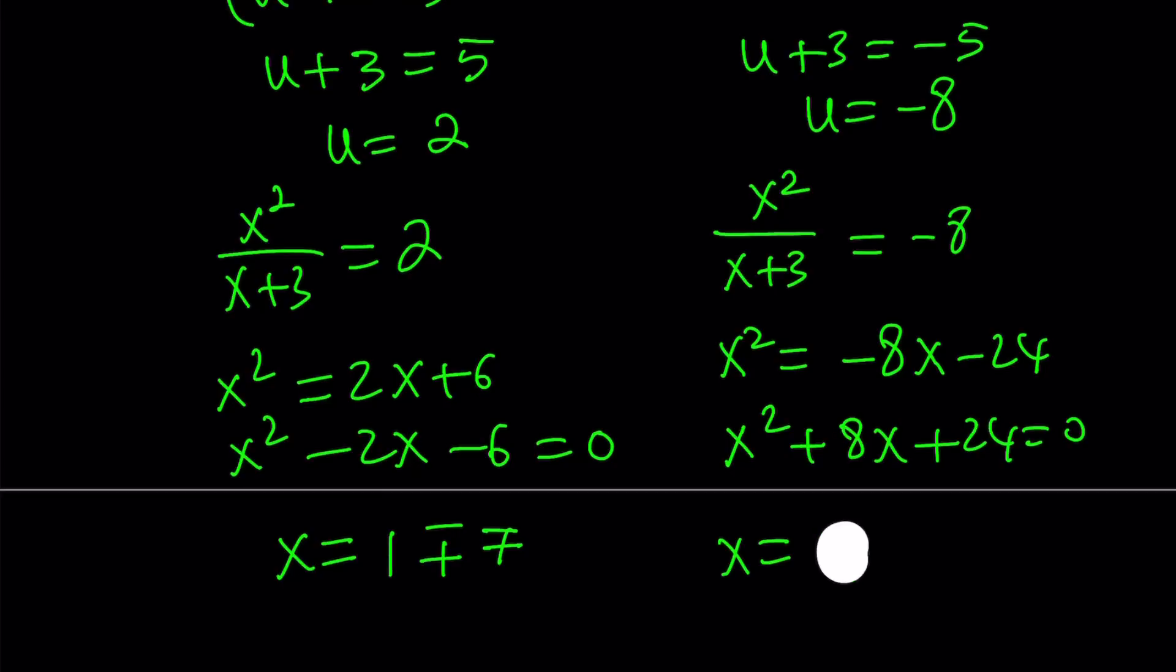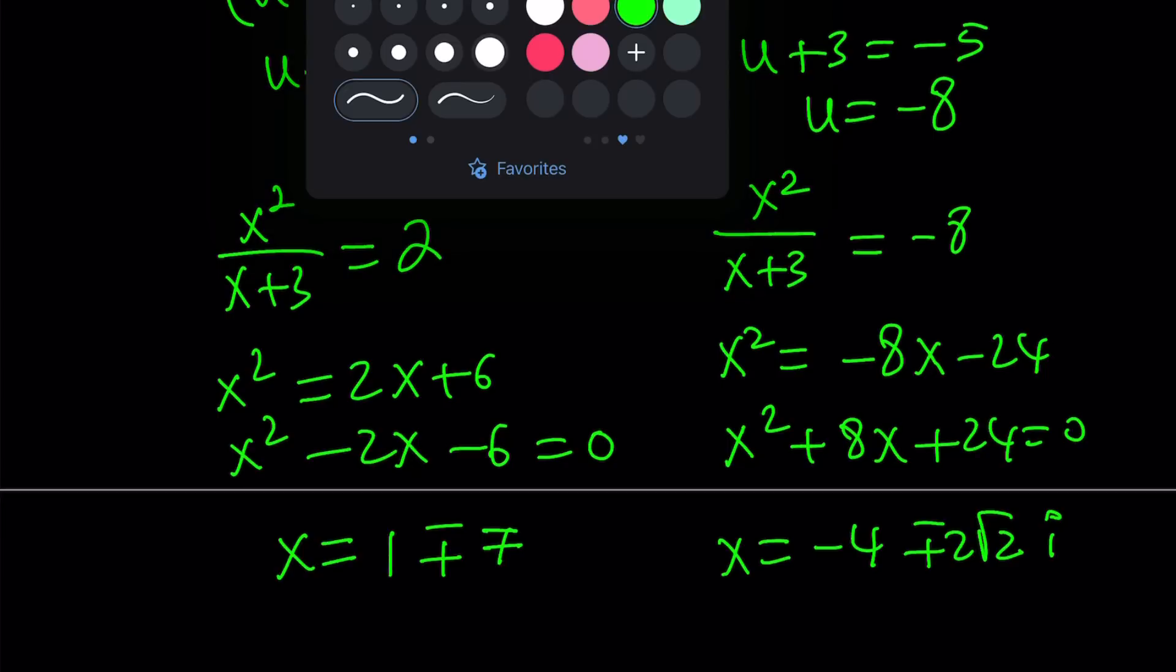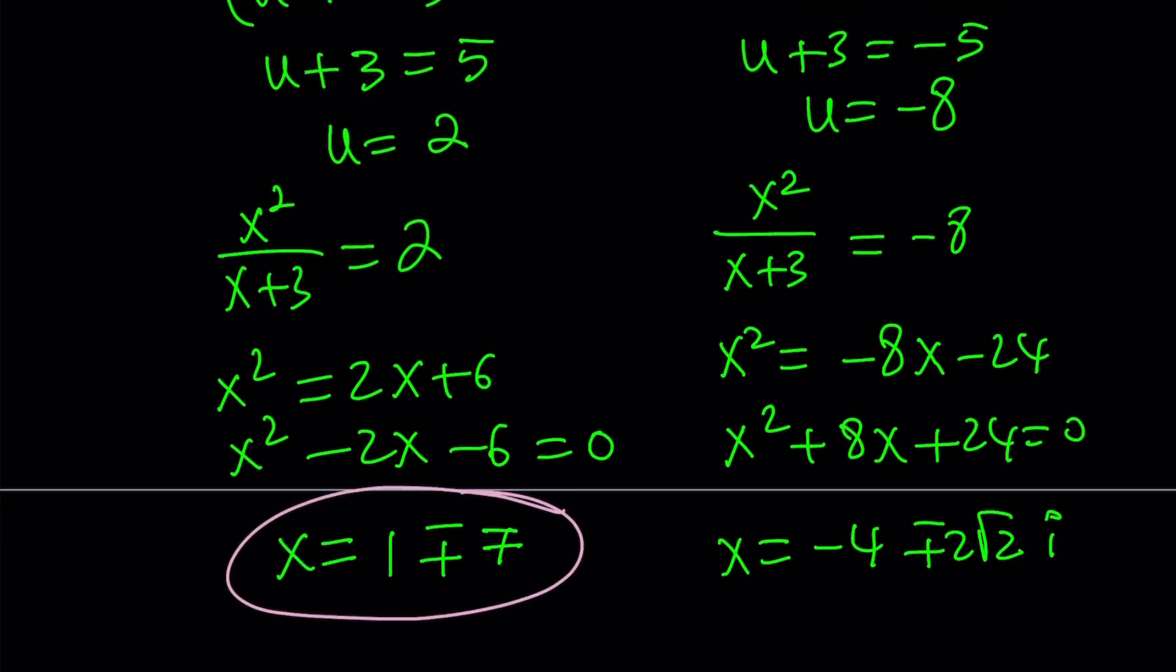It's x equals negative 4 plus minus 2 root 2 multiplied by i. So we got four solutions. Obviously, that makes sense because this is a quartic equation. So we should be getting four solutions, right? That makes sense. But two of them are not real. And we'll talk about that later.